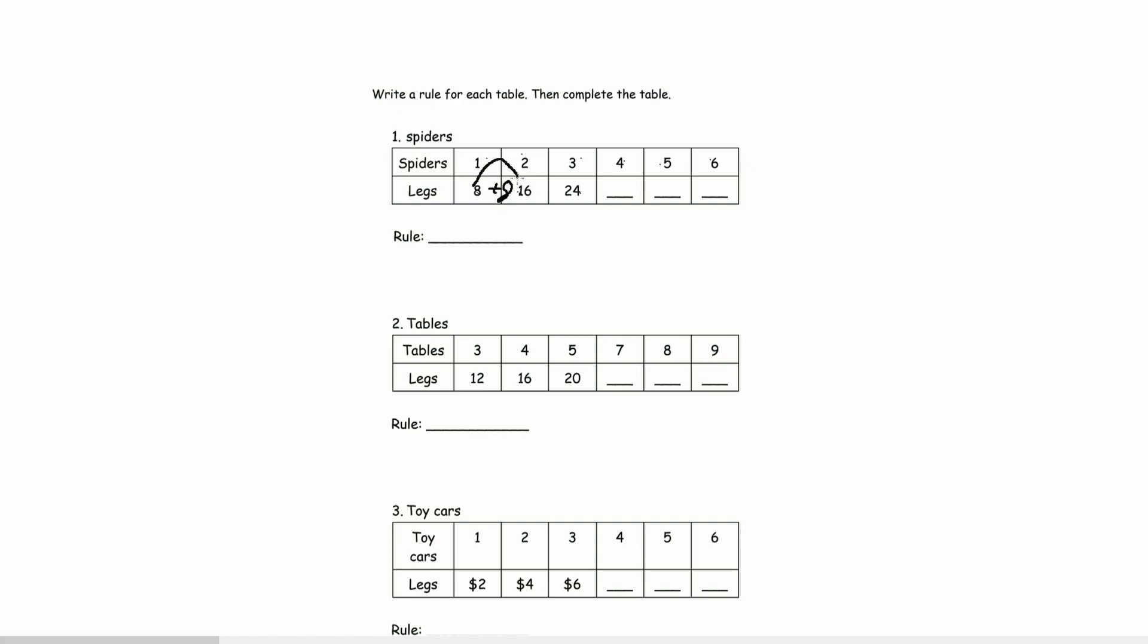And from 16 to 24, it's also plus 8. So the rule here is that the number of legs go up by 8. The number of legs go up by 8. So 24 plus 8 is 32. And keep that going.